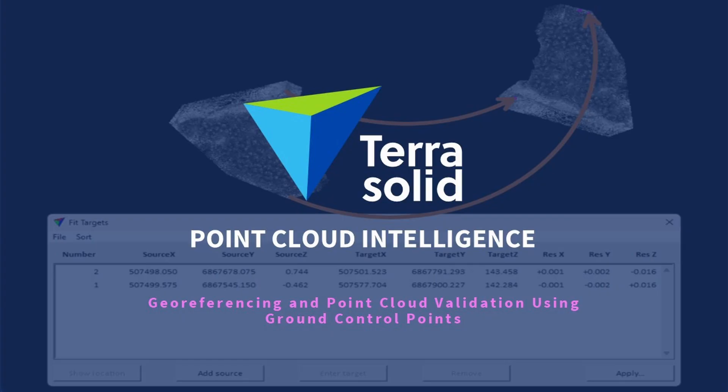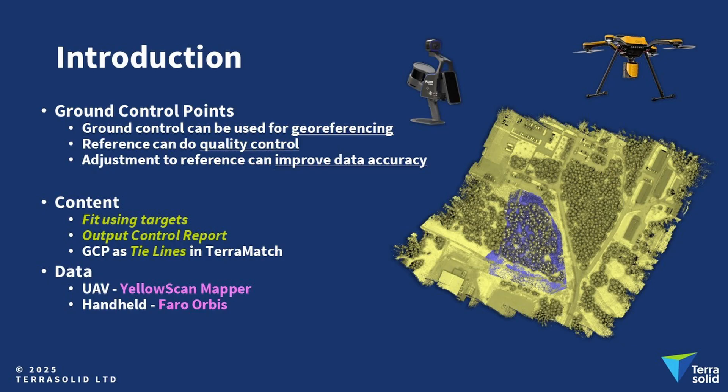Welcome to a tutorial showing three ways how ground control points can be utilized in TerraSolid software. This video will show how to import ground control points, how to georeference a point cloud with fit using targets, how to check position accuracy and create a report with output control report, and lastly using TerraMatch to demonstrate how ground control points can be used as tie lines as a more advanced approach.